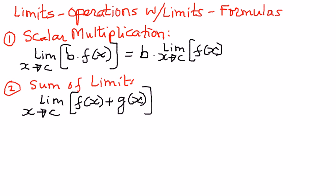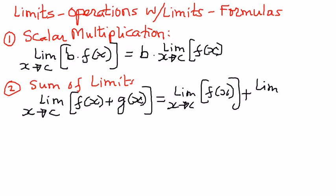can be written out as the limit of the first function f of x as x approaches c, plus the limit of the second function g of x as x approaches c. In words: the limit of a sum is the sum of the limits. The limit of the sum of two functions is equal to the sum of the limits of the individual functions.